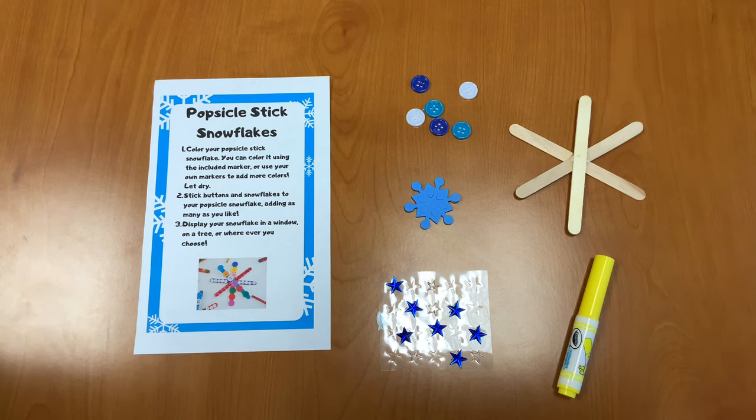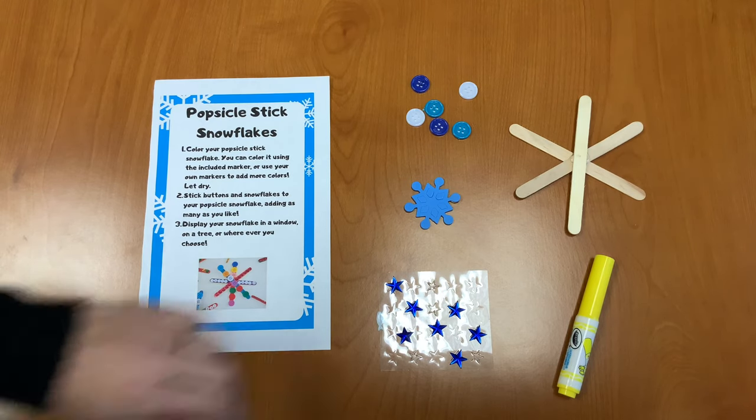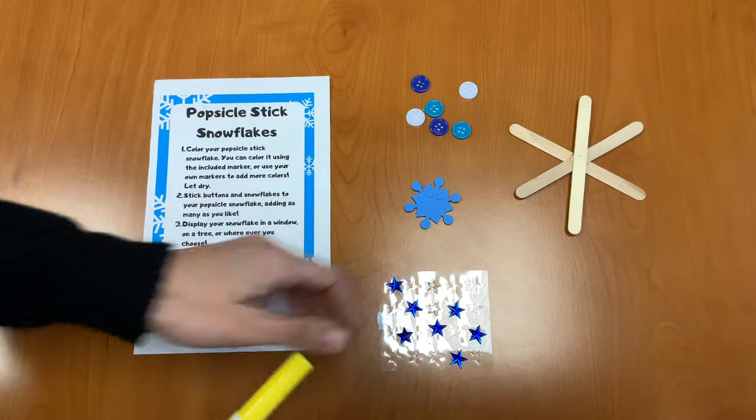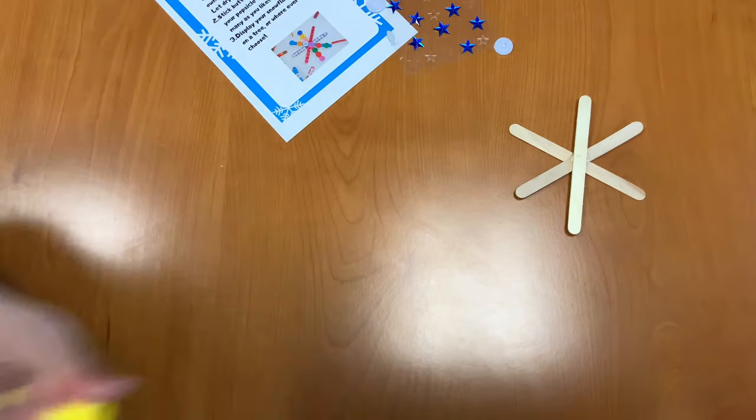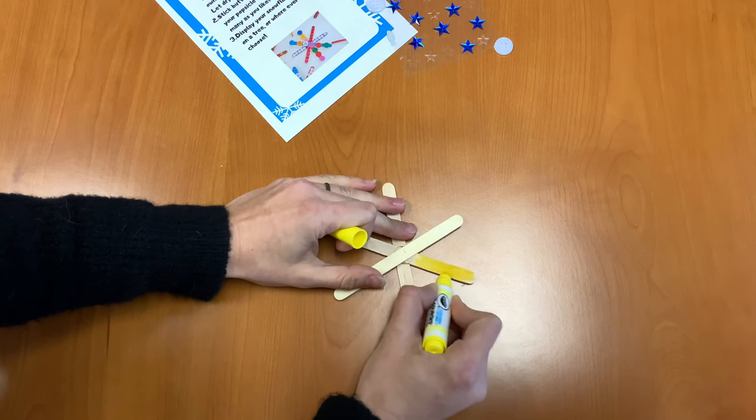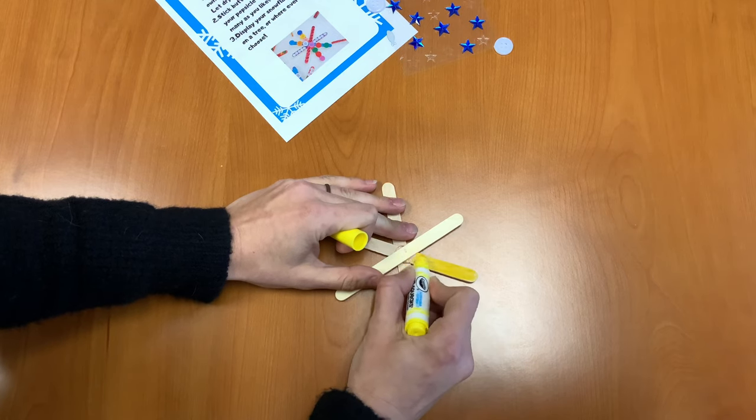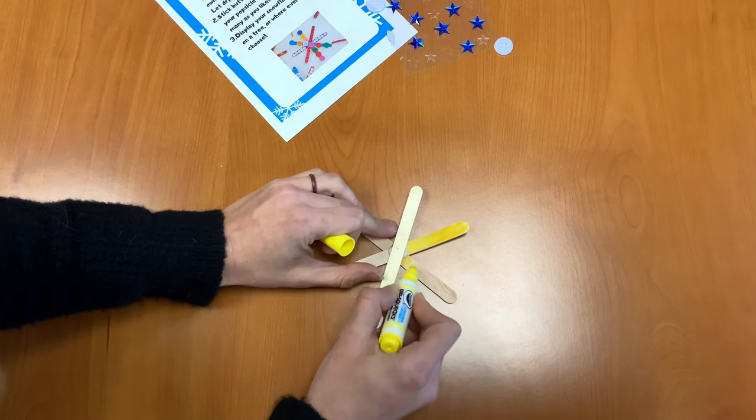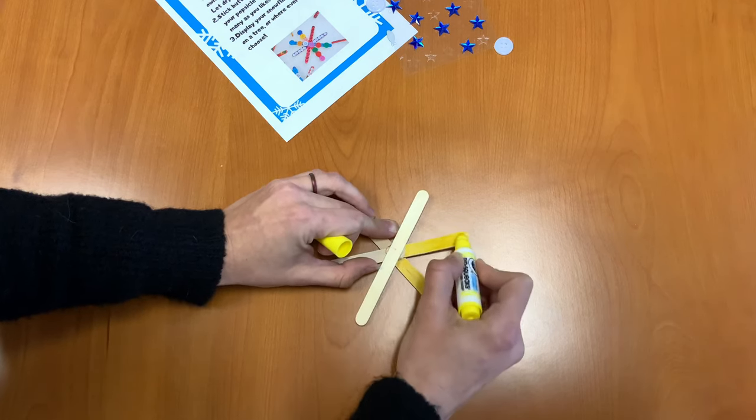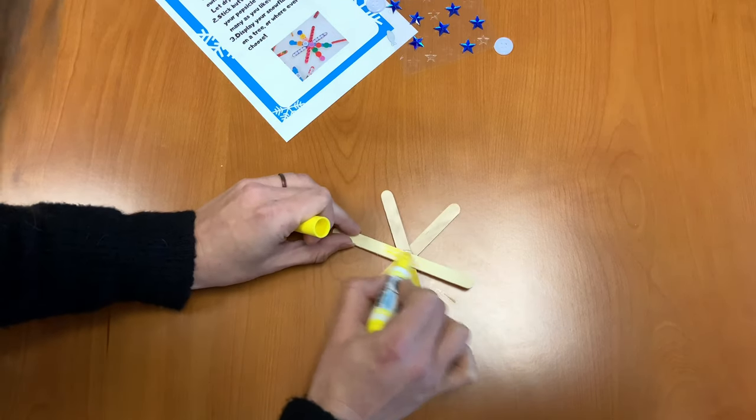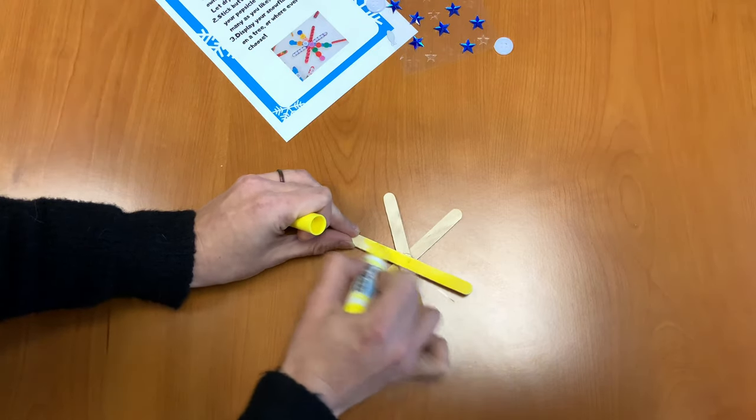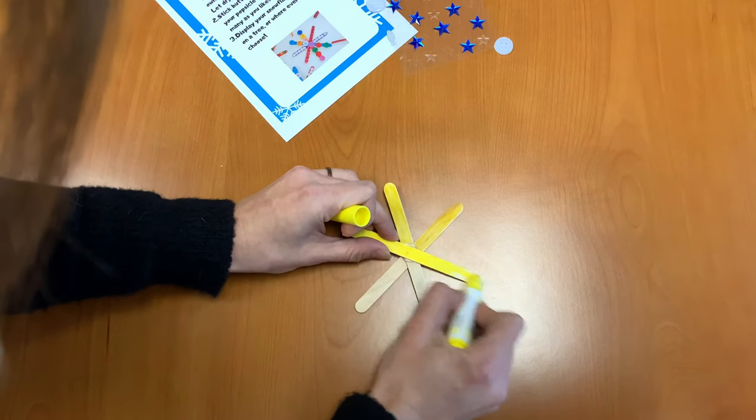Let's get started. Our first step is to color your popsicle stick snowflake. You can color it using the marker that I've included in your kit or you can use any of your own markers. So we're going to color that and then we're going to let it dry. So I'm just going to color on the wood. Make sure I get all those spots. So I have a yellow snowflake because I think that yellow and blue go together really nicely.